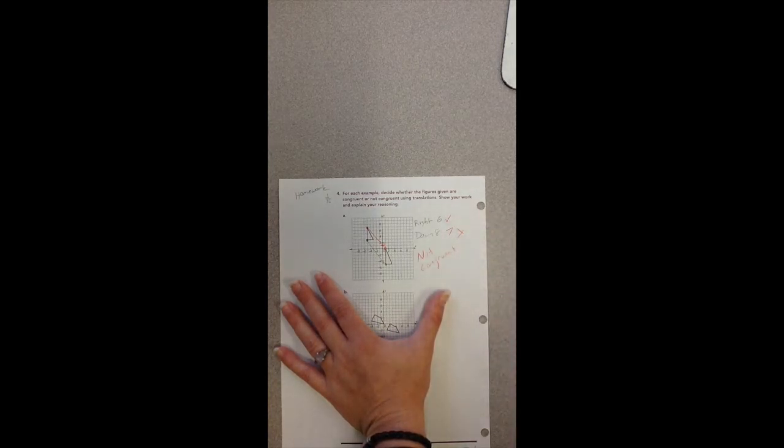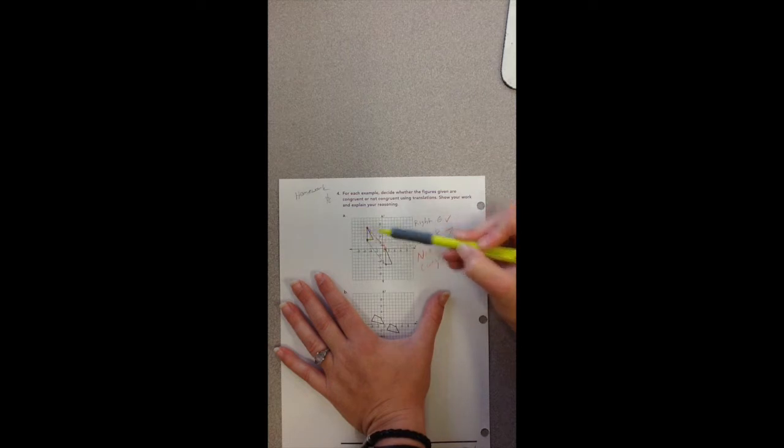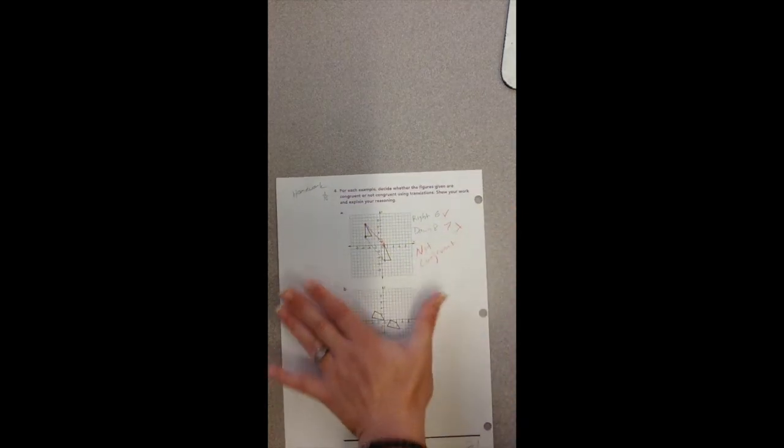And of course the other way that you could have seen that was the fact that this side length is one, two, three, four and this side length is one, two, three, four, five. So it's just the fact that the shape changed, it obviously can't be congruent.